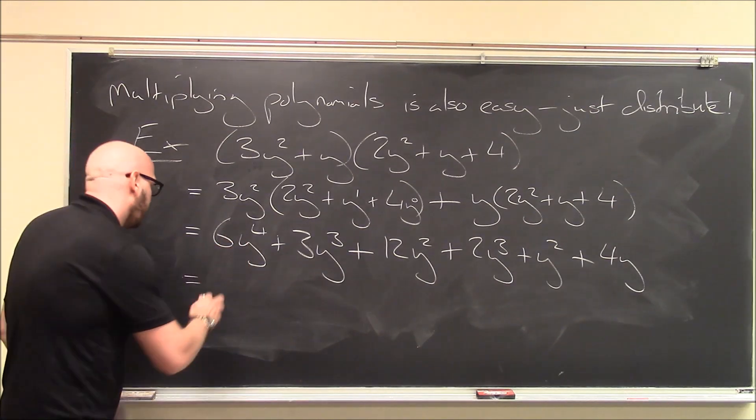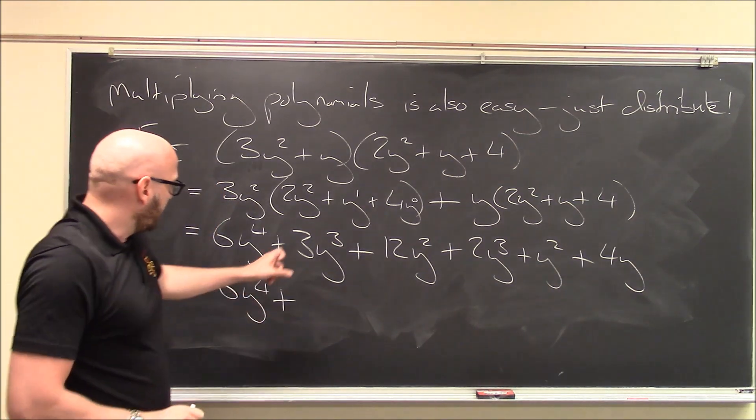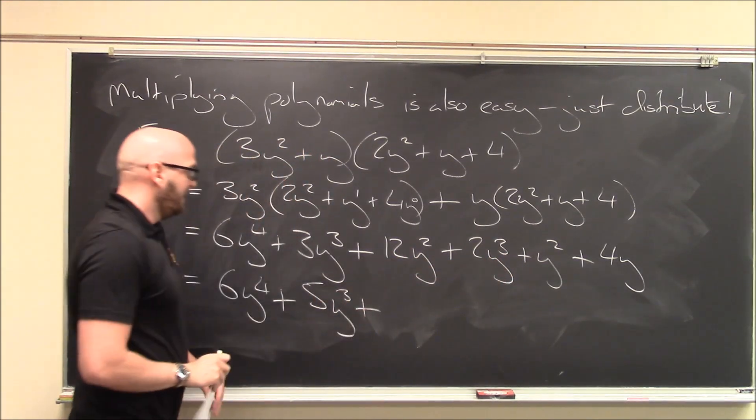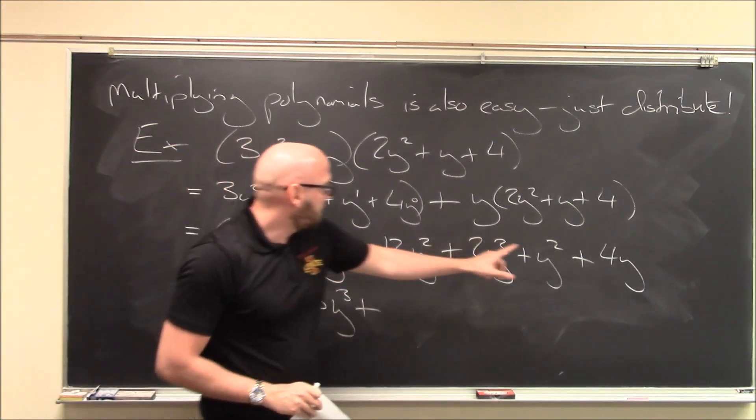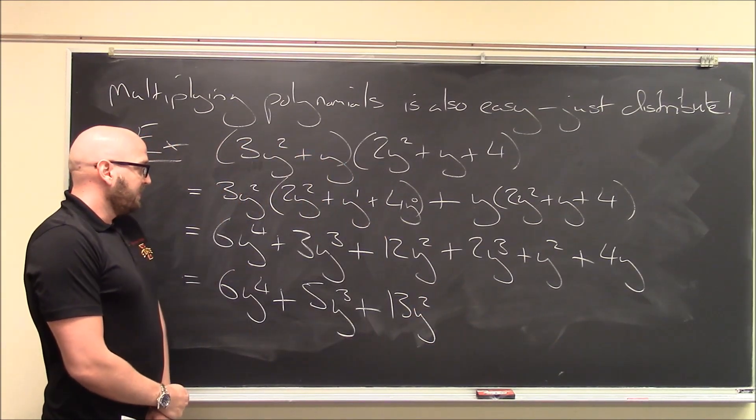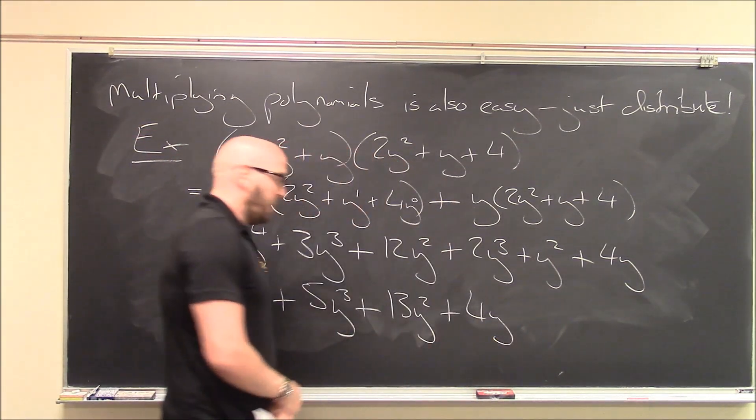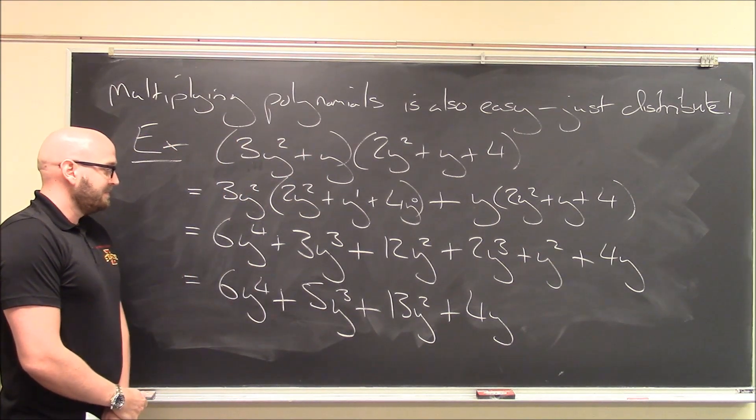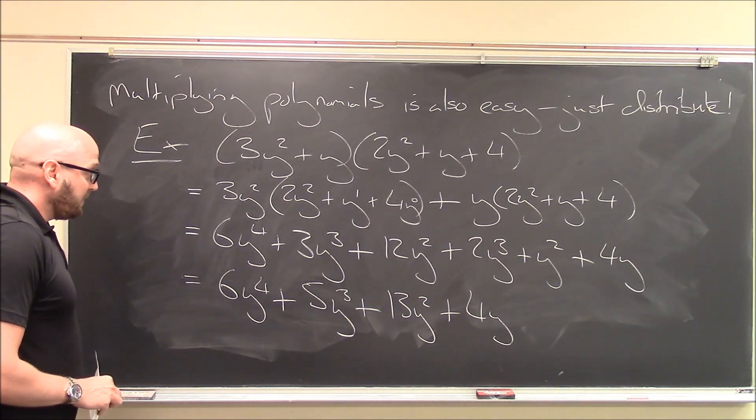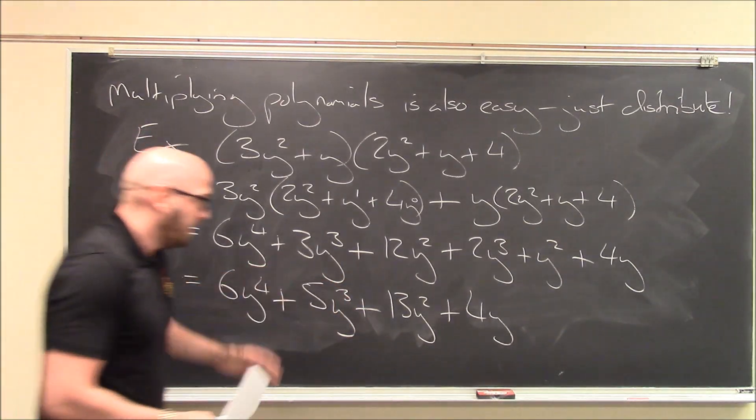This is my only term with a y to the fourth. So, write it first. 6y to the fourth. How many y cubed do I have? I've got 3y cubed plus 2y cubed is 5 of them. So, plus 5y cubed. How many y squared? So, 12 and 1 is 13y squareds. And, just making sure I'm taking care of all of them. And then, plus 4y. And, that's about as clean as I'm going to get it. There is, in fact, there is some factoring I could do here to clean this up a little bit further. But, that's the next section. So, I'll stop here with this.